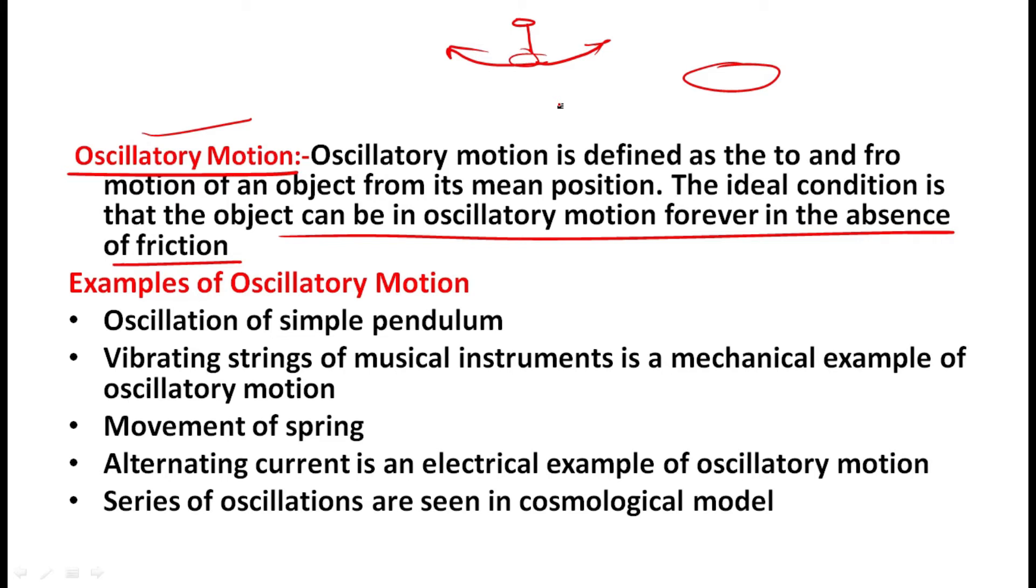Now the object can be in oscillatory motion forever in the absence of friction. But in reality it is not possible because friction exists. So that is why oscillatory motion forever continues at a certain time period, it will stop.